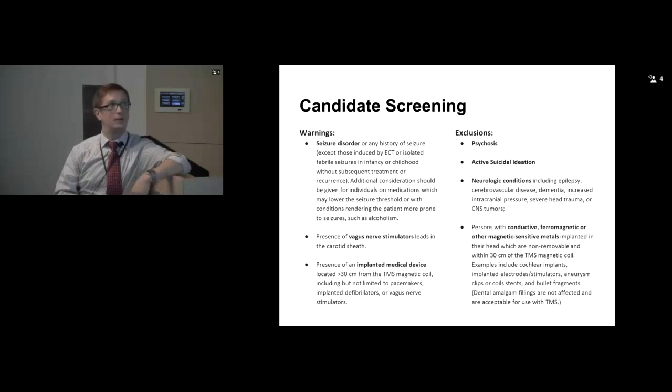What things do we screen for? Standard things as dictated by manufacturer and payers. This is more restrictive than a lot of community providers. No seizure disorders, no history of seizure except kid febrile seizure. Vagus nerve stimulators, leads up in carotid sheath, we're not going to take you. Any implanted medical devices within 30 centimeters of the magnetic coil. Right now we're steering clear of devices altogether. Absolute exclusions: psychosis is a no-no, active suicidation not going to do it. Other severe neurological conditions. And the big thing is if you have something metal in you, welder for lot of years with metal in your eyes, plate in your head, any of that stuff, we're not willing to take that risk.